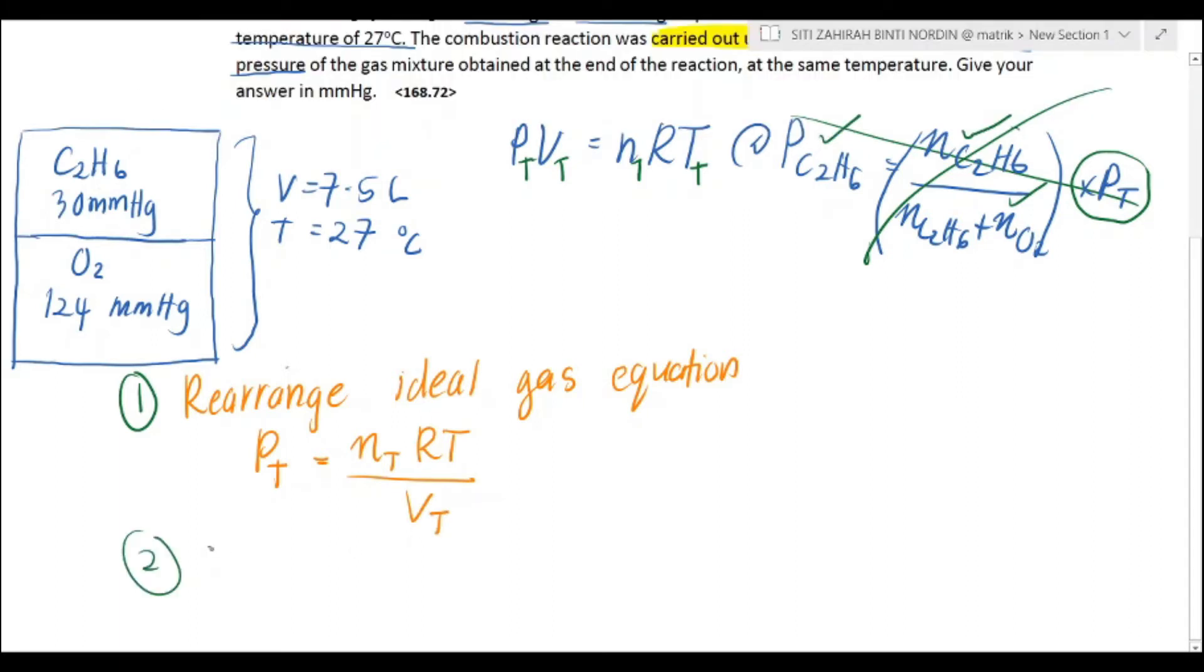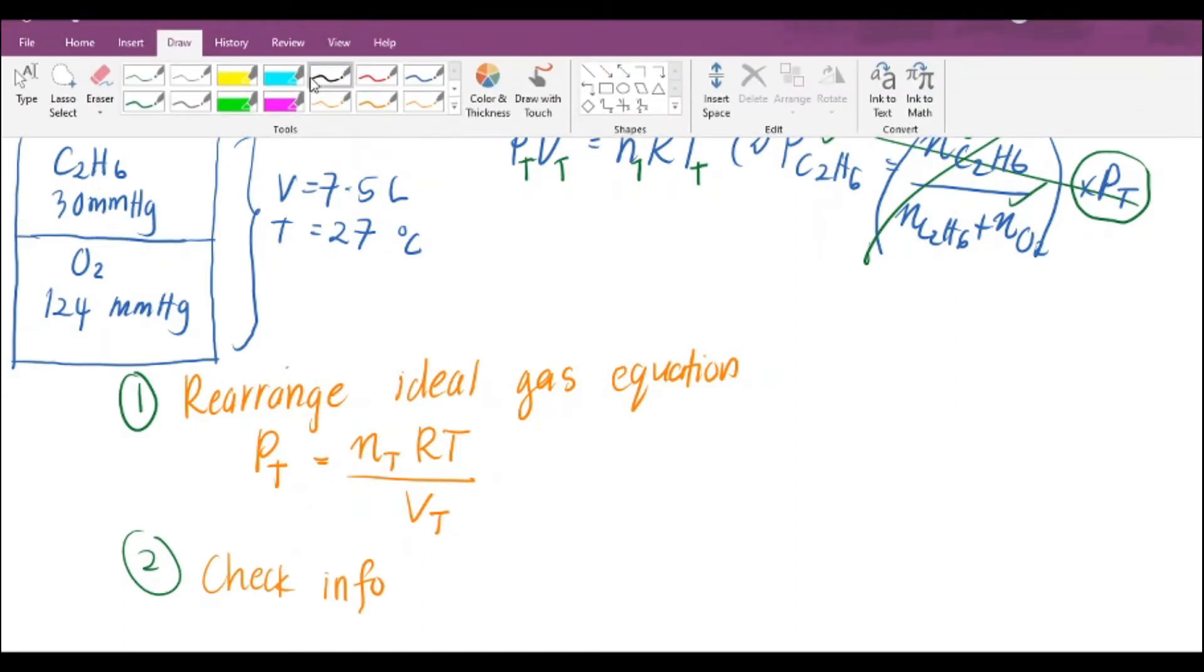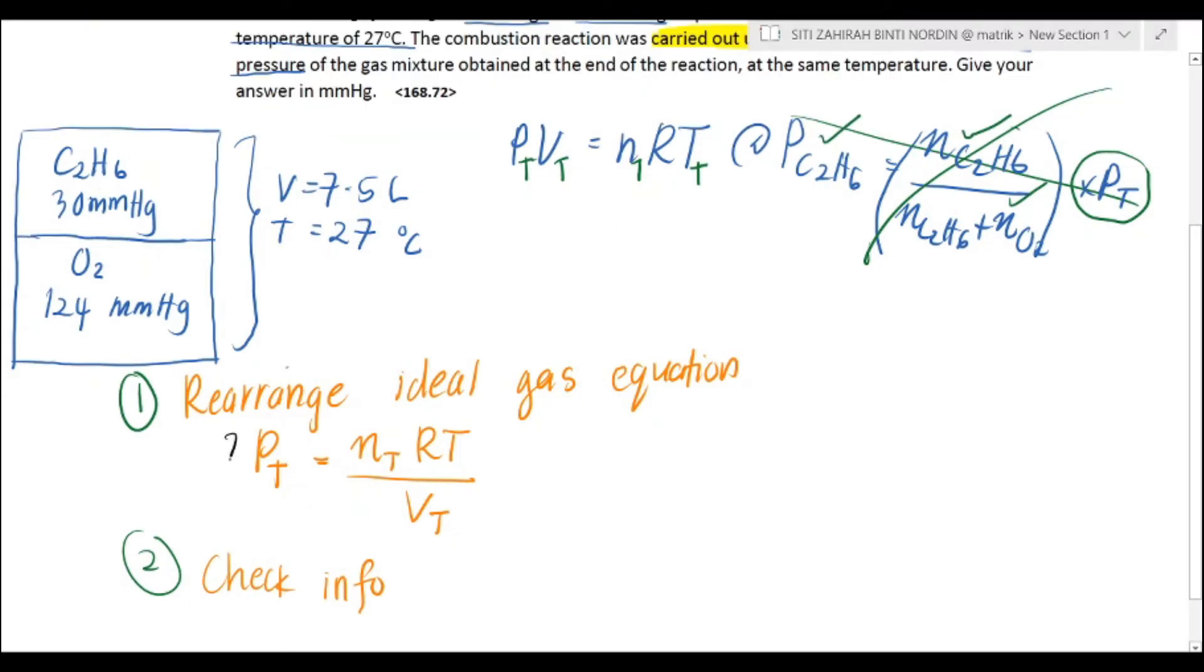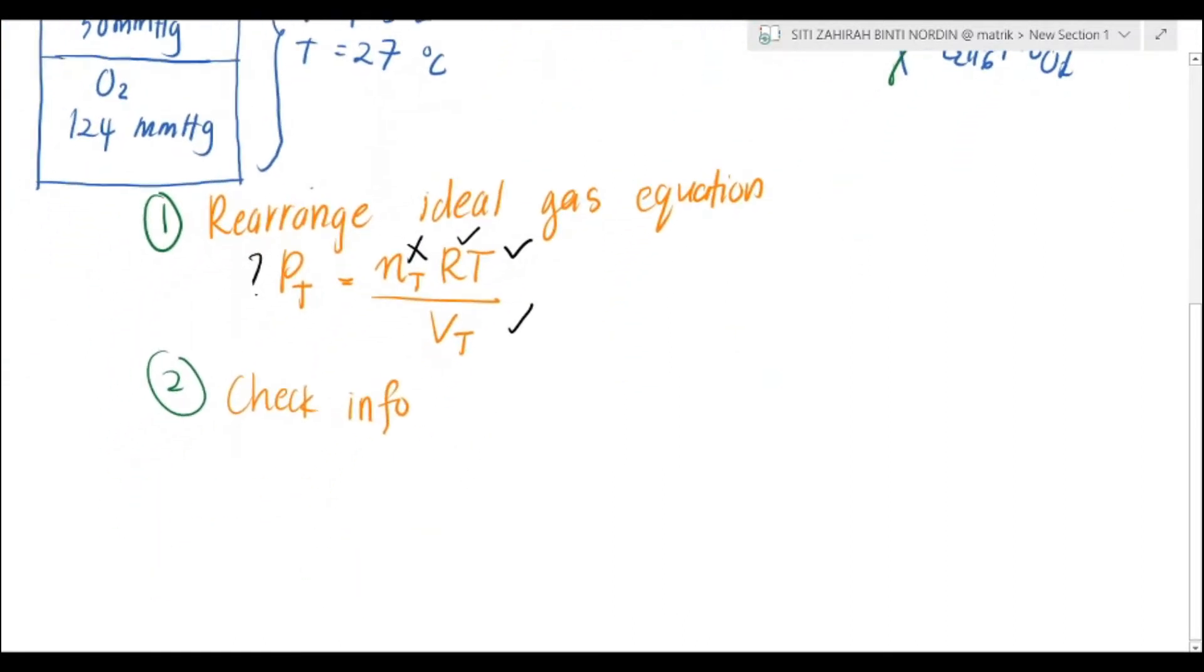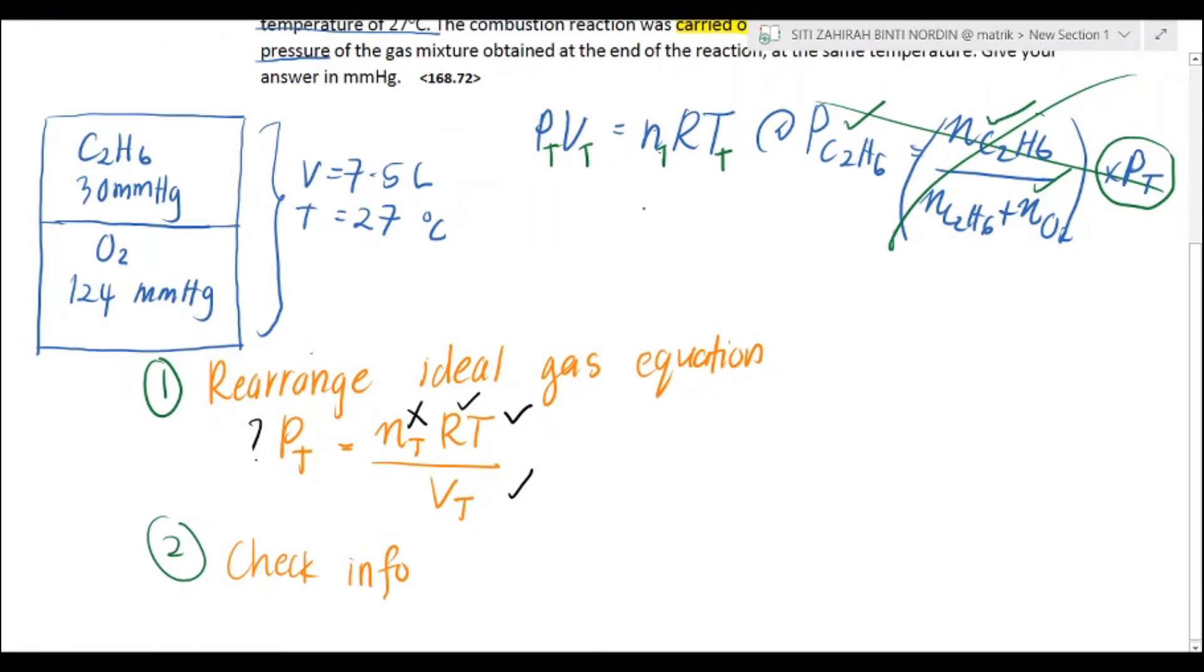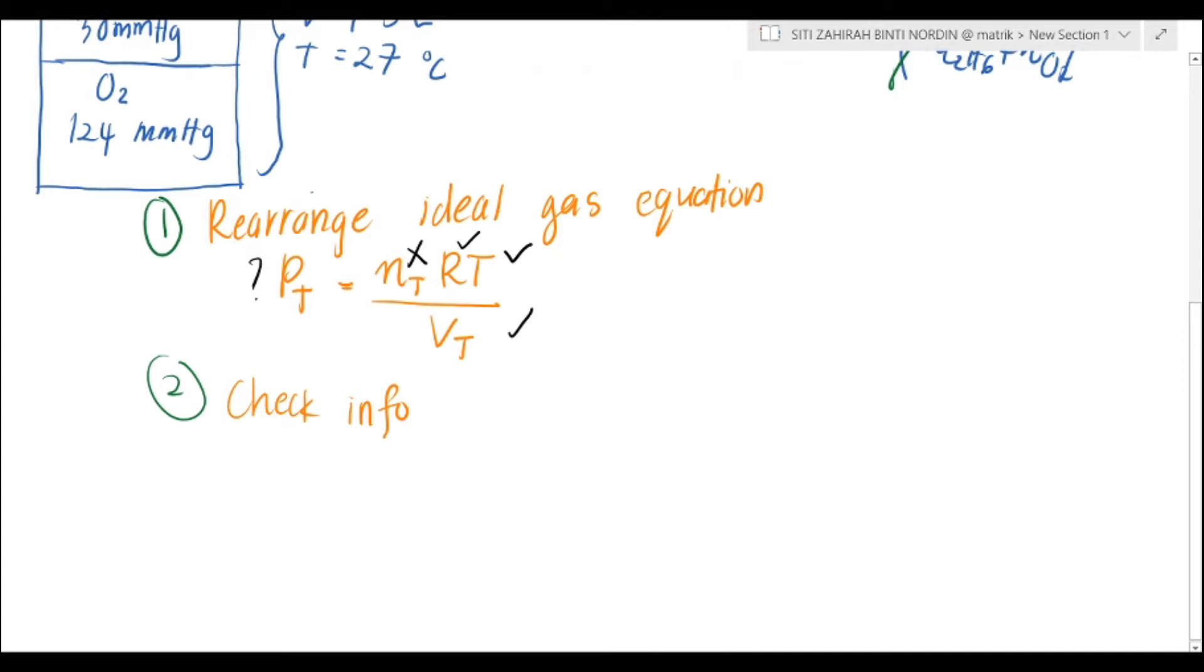Second, check your info. What do we have in this question? We want to find this. Do we have mol total? No. Do we have R? Yes. Temperature? Yes. Volume? Yes. So the only thing that we need to find is the mol total. It's going to be easy for us by using, again, the ideal gas equation. But, class, you must alter this ideal gas equation.